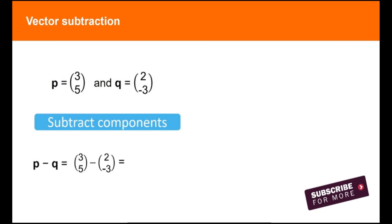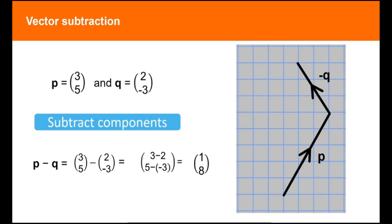In this example, the resultant vector is 1, 8, 1 to the right and 8 up. This can be pictured on a diagram as follows.